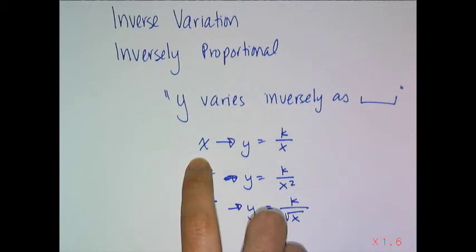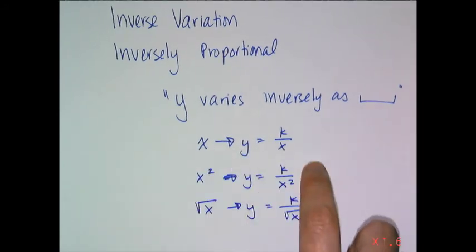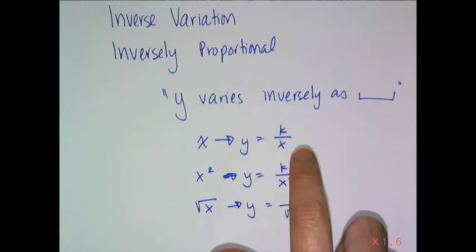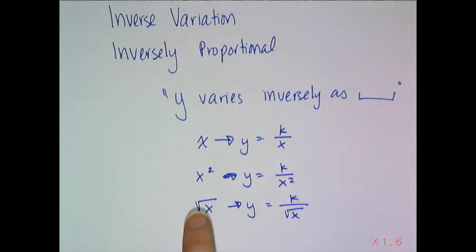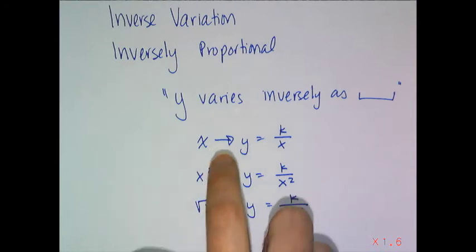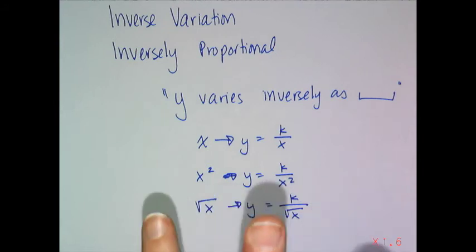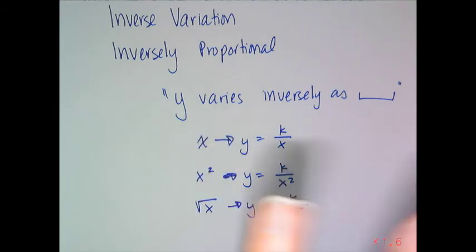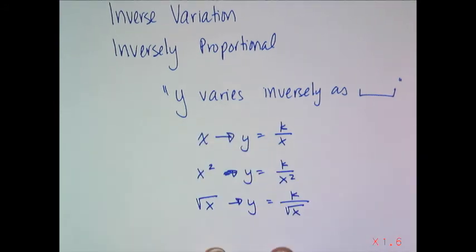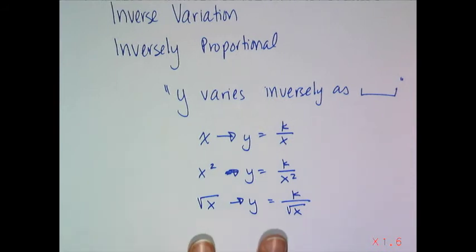If it's just x, that means it's y equals k over x. If it's x squared, it's y equals k over x squared. If it's the square root of x, then it's y equals k over the square root of x. I can put pretty much anything in there. I can even put a polynomial of x in there and say it varies inversely as x squared minus x or whatever.